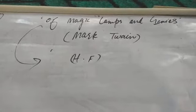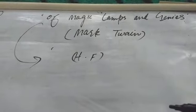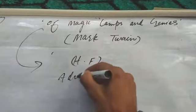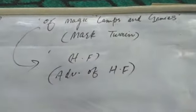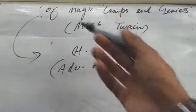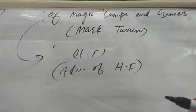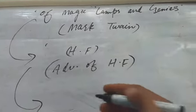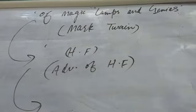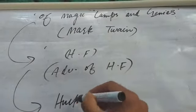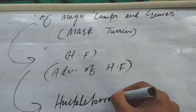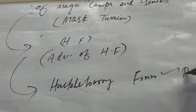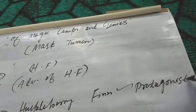It is said that all of American literature comes from Adventures of Huckleberry Finn. This lesson of Magic Lamps and Genies is about the protagonist, the main character of this story. His name is Huckleberry Finn. He is the main character of the story, the protagonist.